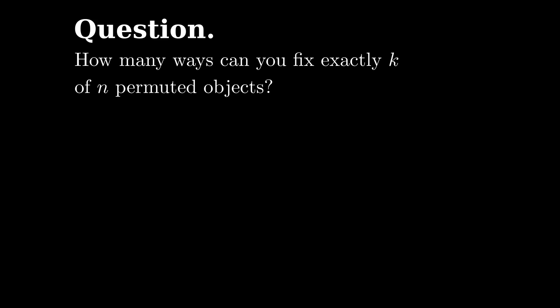Well, of the n, choose k to fix, then derange the rest. That's n choose k times d sub n minus k.